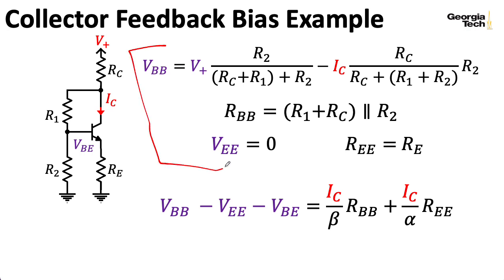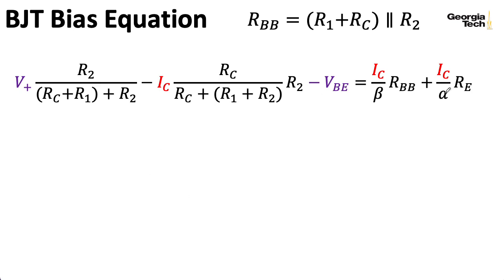All right, so if I take the various expressions up here and plug them into our BJT bias equation down here, I wind up with this long, messy equation here. Notice that I've written RBB up here instead of substituting it in here directly just to try to make everything fit on the slide.